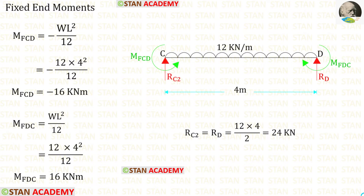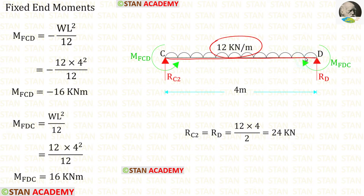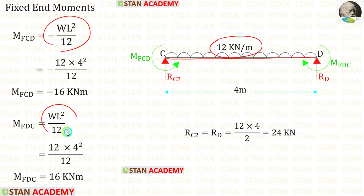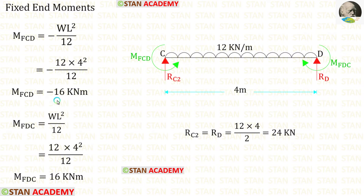Now let us find the fixed end moments and reactions in span CD. In span CD, we have a uniformly distributed load of 10 kilo Newton per meter acting for the full span. The formulas to find the fixed end moments are minus WL² upon 12 and positive WL² upon 12. Here W is 12 and L is 4. After calculation, we get M of CD and M of DC.